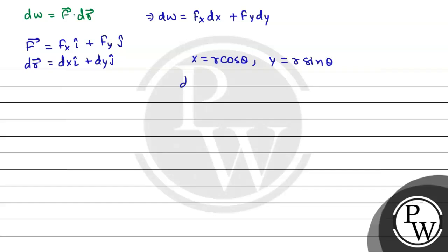So dx by d theta will be equal to r into minus sin theta, that is minus y. dx by d theta equals minus y. And dy by d theta will be equal to r cos theta, that will be equal to x. So from here, dx equals minus y d theta, and dy equals x d theta.